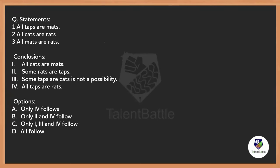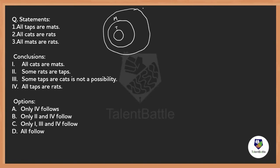This is a syllogisms question. Syllogism questions are basically solved using Venn diagrams. Given: all taps are mats, all cats are rats. I don't know where these cats and rats are, so I'll leave that for now. Looking at the third statement — all mats are rats — you can say this diagram follows. In syllogisms we always go with the minimum and maximum possibility.